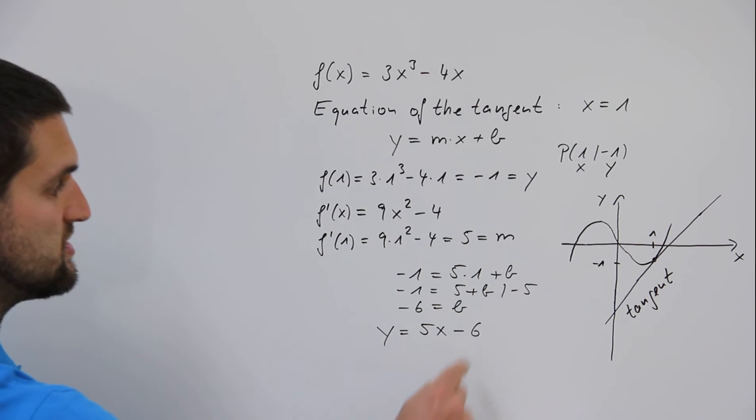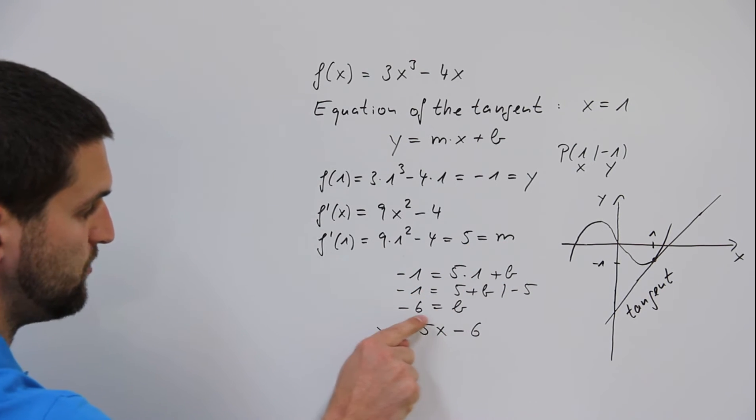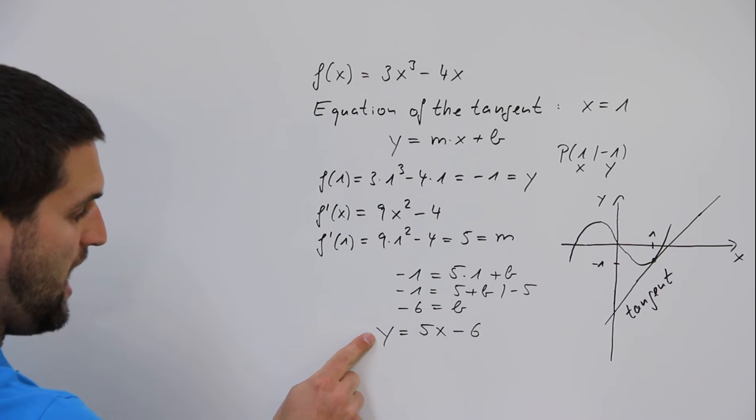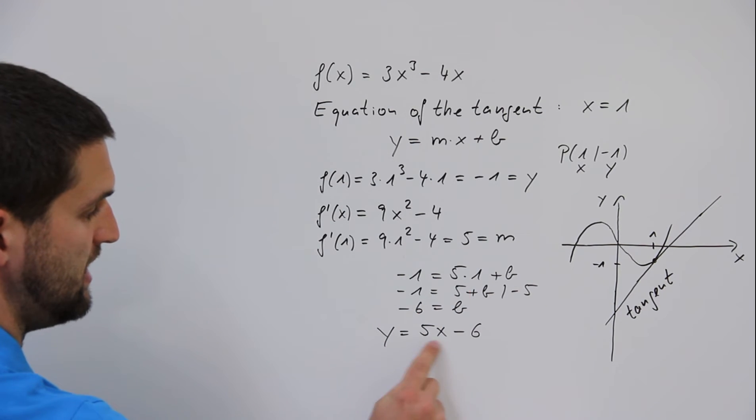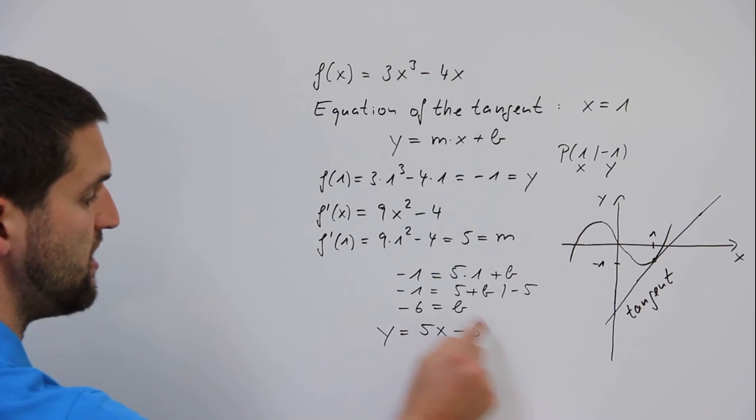And now we can use the value of m equals 5 and the value of b equals minus 6. y equals 5x minus 6, and we have the equation of the tangent.